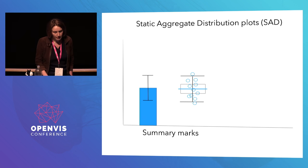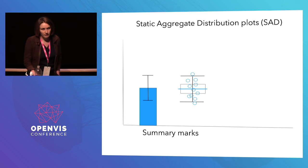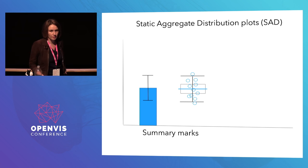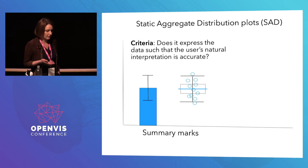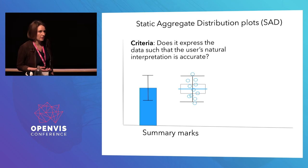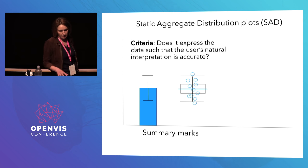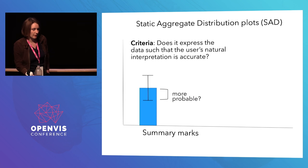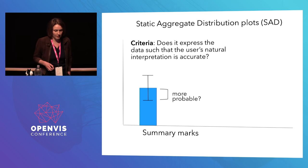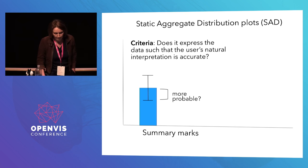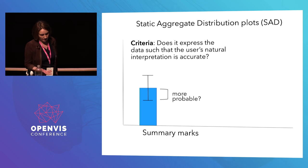One of the things I want to convince you of today is that most of the time uncertainty visualization uses one of these static aggregate distribution approaches, and there are problems with those. In InfoViz research, we have a criterion called expressiveness: does the visualization express data in a way that the user's natural interpretations are accurate? We see these summary-mark-based approaches fail sometimes in this regard. One thing people do with error bars is show within-the-bar bias — they see half of the error bar on top of the data and think that part must be more probable. Actually, this is not true.